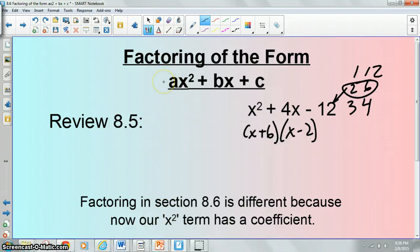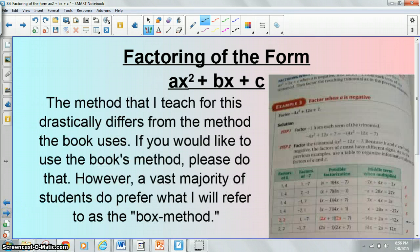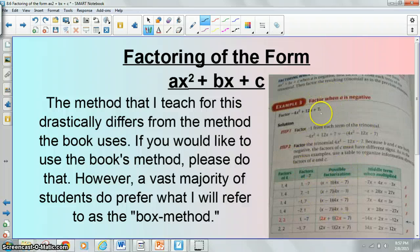Factoring in section 8.6 is different because now our x squared term has a coefficient. So there is going to be some number there which makes it significantly more difficult. The method that I teach for this drastically differs from the method that the book uses. A vast majority of my students do prefer what I will refer to as the box method. And that is the one I'm going to be teaching on in this lesson.